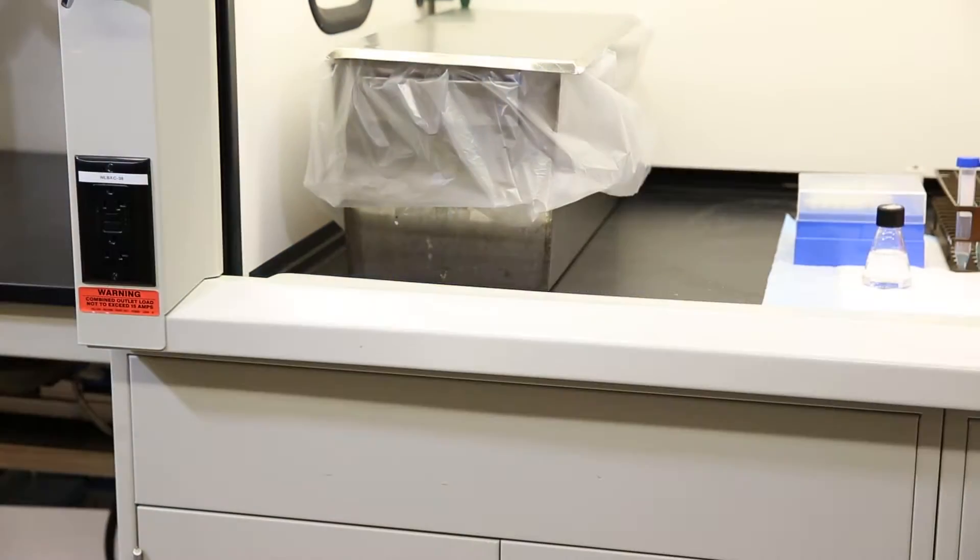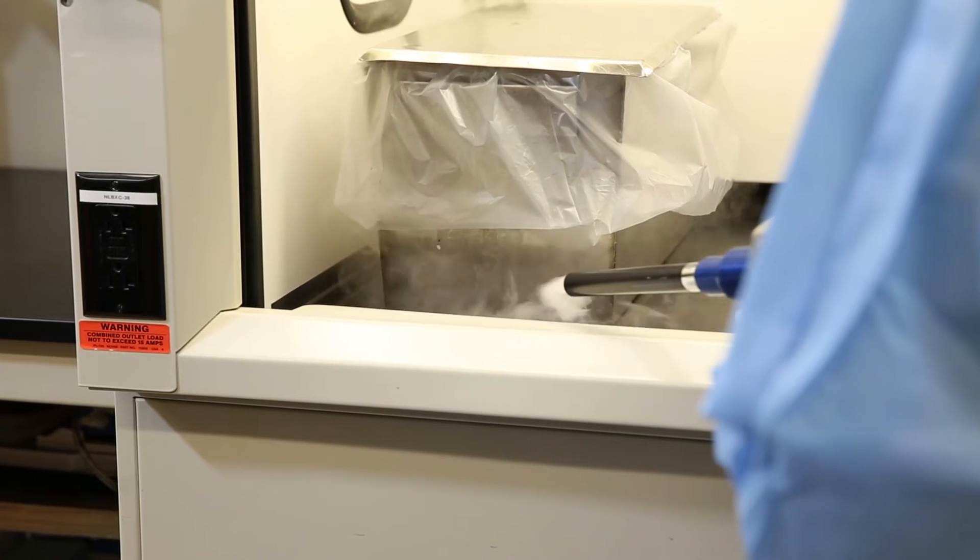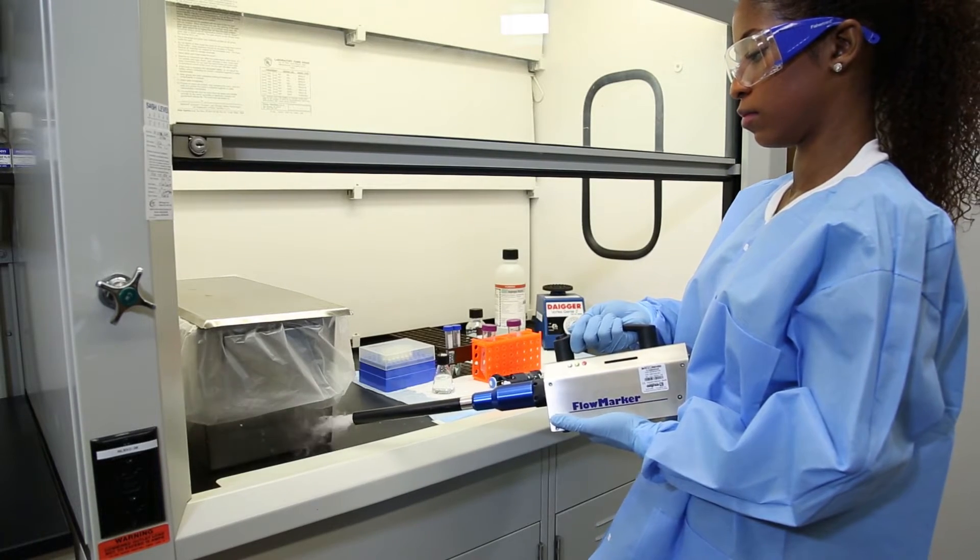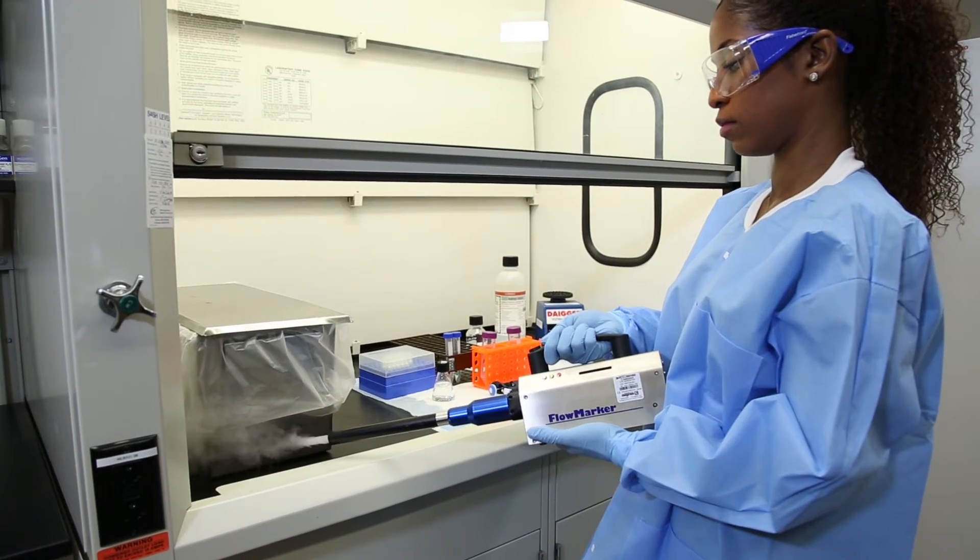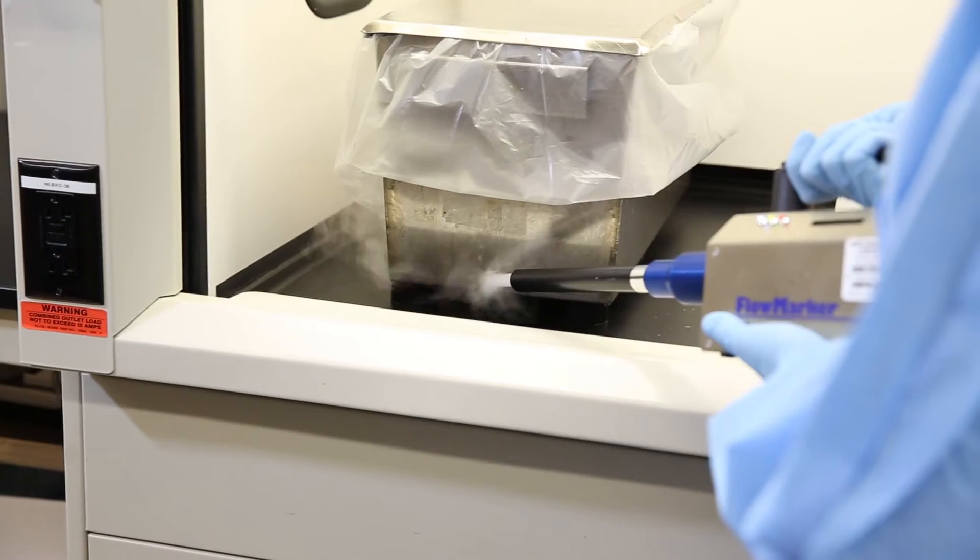Large equipment inside the hood can obstruct the airflow and may allow vapors to escape into the lab. Equipment should be elevated to allow air to flow under it so the proper fume hood airflow patterns will be maintained.